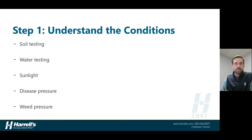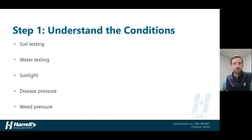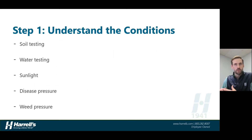Step one: understanding the conditions. This is something that every turf manager should go through, whether you're new to a property or maybe you've been at a property for a while and need to do a reevaluation of the basic agronomic situation when you're trying to develop an agronomic management plan. It starts out with soil testing, water testing, looking at what the sunlight conditions may be around the property. Do we have areas that are high shade or low sunlight that are going to be challenging to grow turf in?